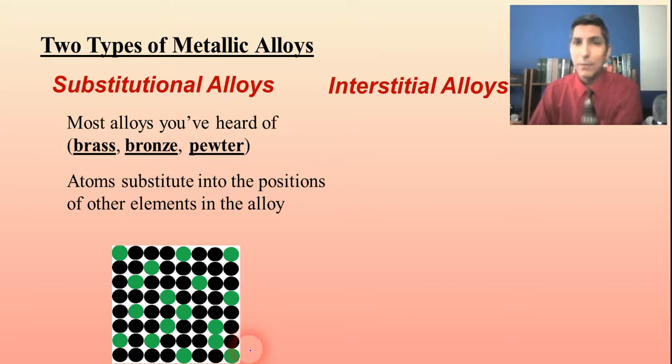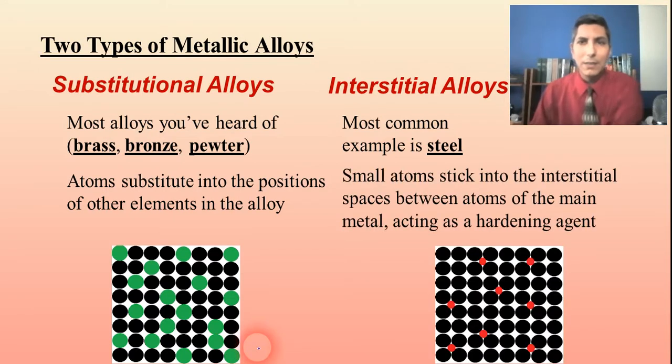The other type of alloy is called an interstitial alloy. It's a little bit different in its nature. The most common example that you're going to come in contact with in AP chemistry or first year chemistry is steel. Steel as an alloy and as any interstitial alloy actually works quite a bit differently. Instead of atoms substituting into the spaces of atoms, we have atoms that are actually working their way in between the atoms into these interstitial spaces as we call them.